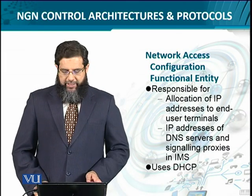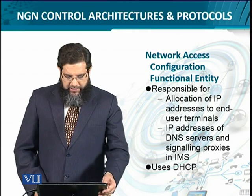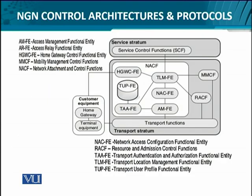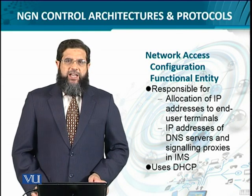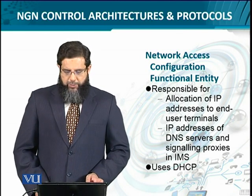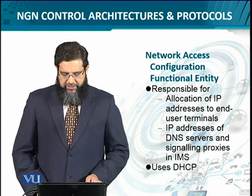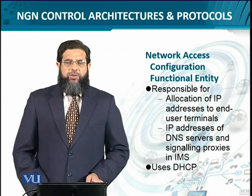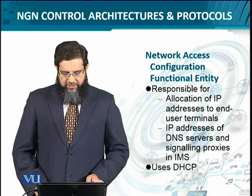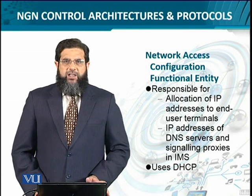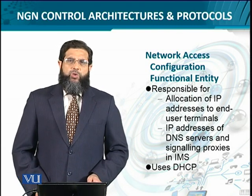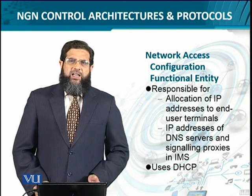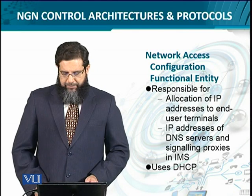The network access configuration functional entity is the first one to begin with. Since NGN is based essentially on IP addressing, it is responsible for the allocation of IP addresses — both the client IP address and the server IP addresses. The server IP addresses could be related to the DNS server and other proxying servers used in signaling for Voice over IP, such as SIP servers.